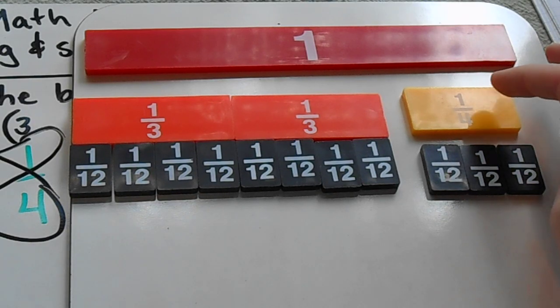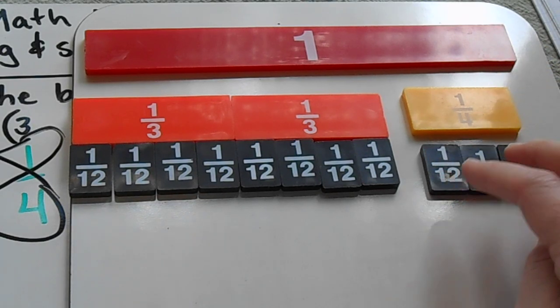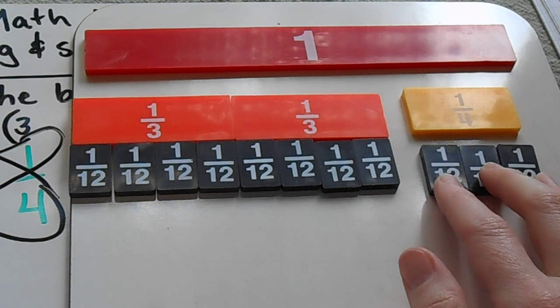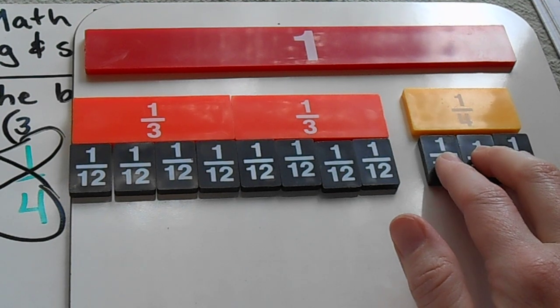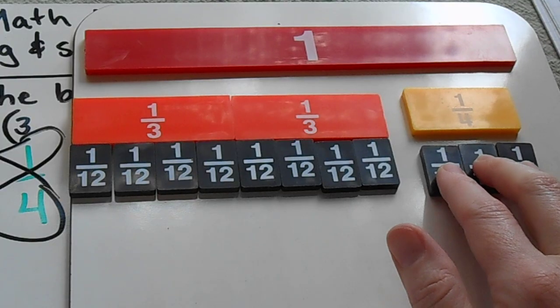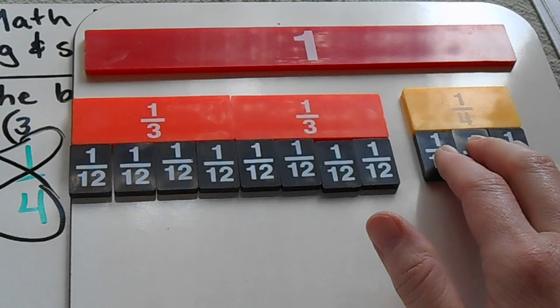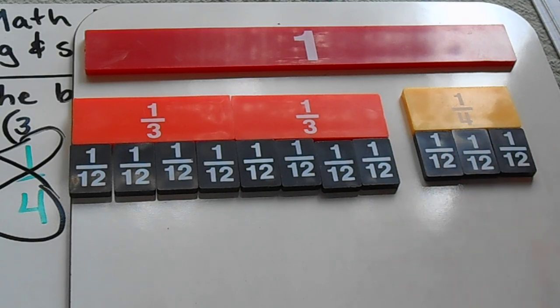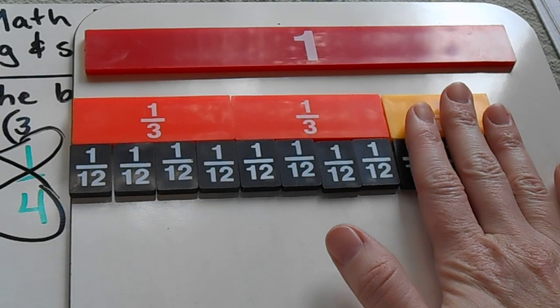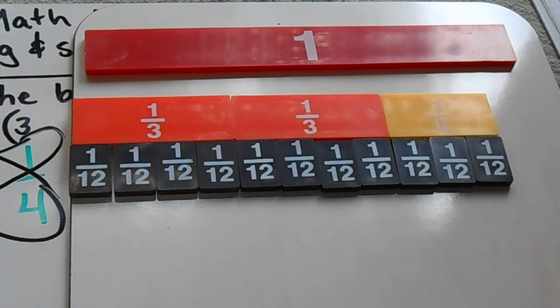And then the same is true for the one-fourth. Since I multiplied that one times three, I'm asking what size pieces can I split this fourth into three pieces? So the answer to that question is twelfths. If I have three twelfths, that's equivalent to one-fourth. So when I add these all together, I get eleven-twelfths.